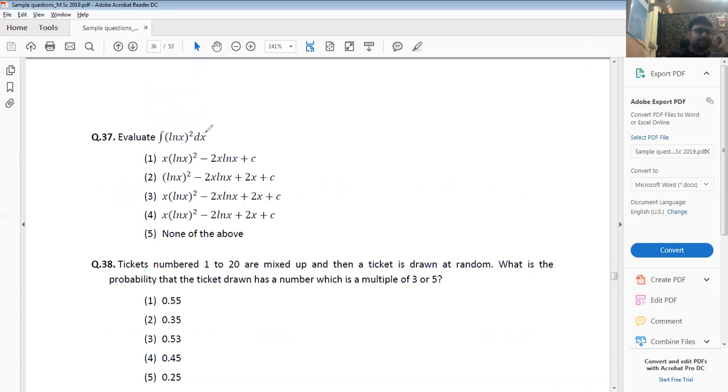Question 37: Integration by parts. What do you do here? You take ln x squared as the first, as the first one.